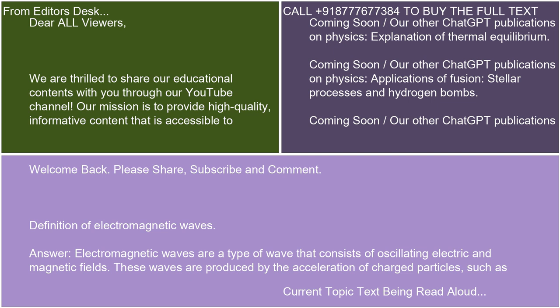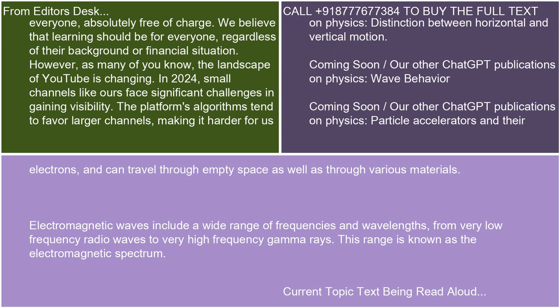Electromagnetic waves are a type of wave that consists of oscillating electric and magnetic fields. These waves are produced by the acceleration of charged particles, such as electrons, and can travel through empty space as well as through various materials. Electromagnetic waves include a wide range of frequencies and wavelengths, from very low-frequency radio waves to very high-frequency gamma rays. This range is known as the electromagnetic spectrum.